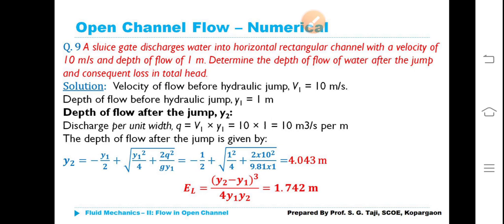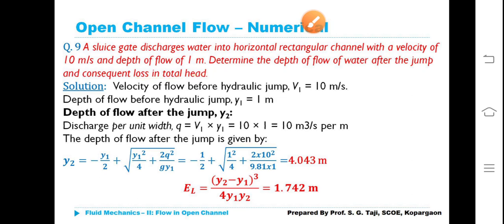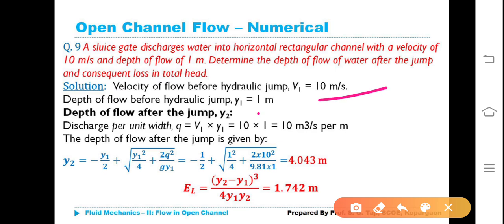Now we will take some numerical problems. Problem 1: A sluice gate discharges water into a horizontal rectangular channel with a velocity of 10 m/s and depth of flow of 1 meter. Determine the depth of flow after the jump and the consequent loss in total head. Given: V1 = 10 m/s, Y1 = 1 m. Discharge per unit width: q = V1 × Y1 = 10 × 1 = 10 m³/s per meter.